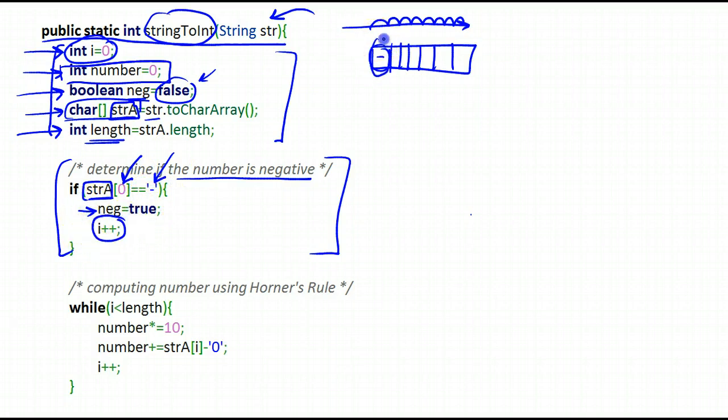So I skip that first character. I've already processed it and then I could go to the next one and start my Horner's rule algorithm. If it's not then I'm just going to skip over this part and go on and i will remain zero. So we're starting at the beginning where it's not a dash. It's going to be a digit.